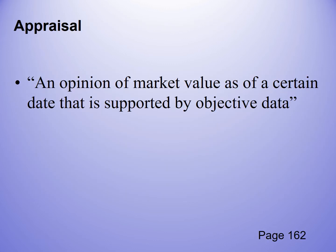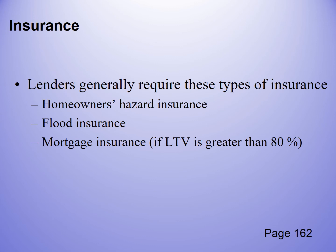An appraisal is an opinion of value, and a lender will have an appraisal done on the property to make sure the collateral being lent on is worth the amount of the loan. Lenders also generally require homeowner's hazard insurance, flood insurance if you're in a flood hazard area, and private mortgage insurance (PMI) if your loan-to-value ratio is greater than 80% — to cover the difference between 80% and your actual LTV.